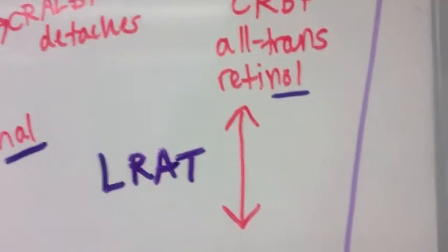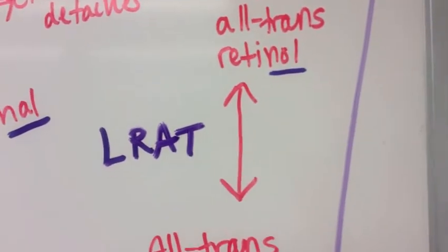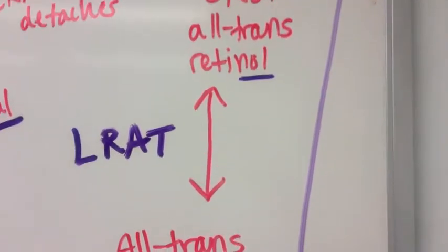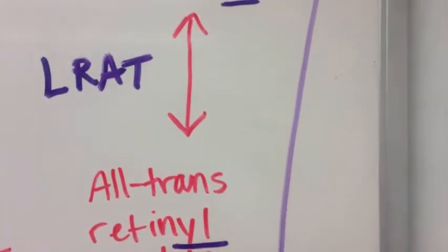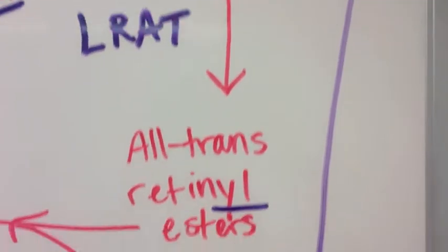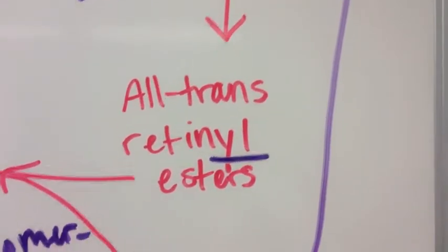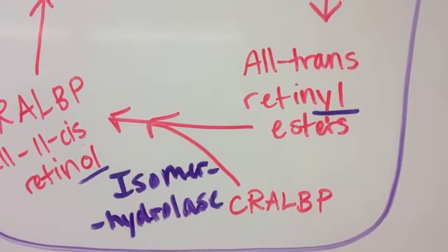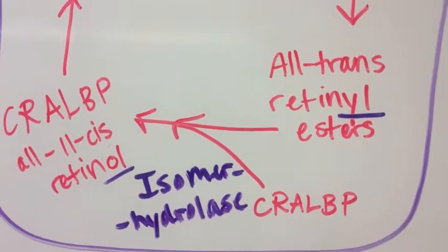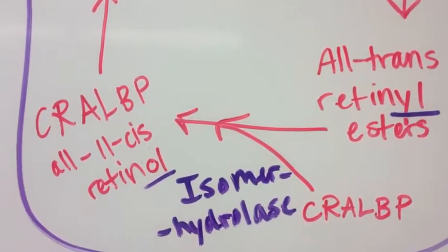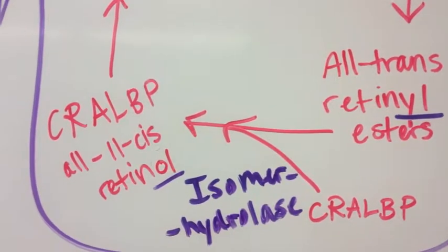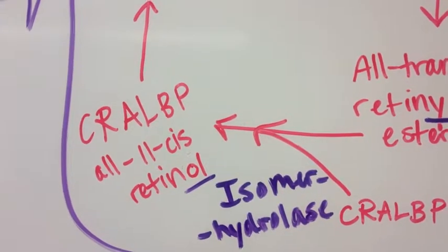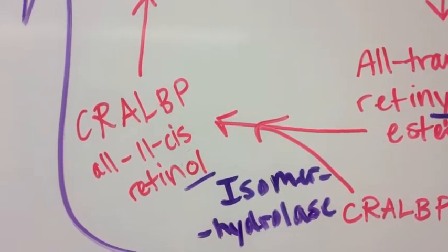Then, the enzyme LRAT, lecithin retinol acyltransferase, initiates the reaction to turn the retinol into retinol esters. The retinol esters are combined with CRALBP and rearranged by the enzyme isomer hydrolase to form all 11-cisretinol bound to CRALBP.